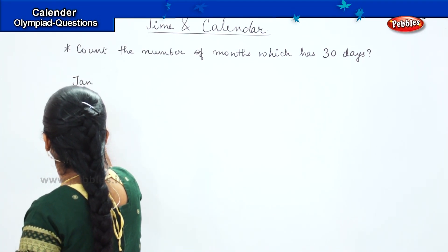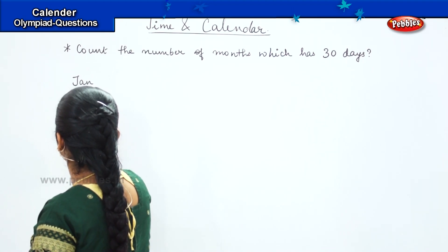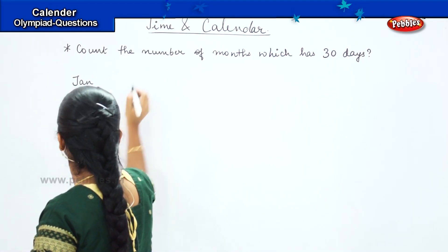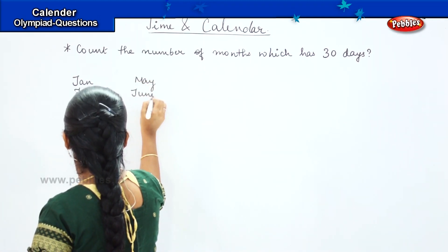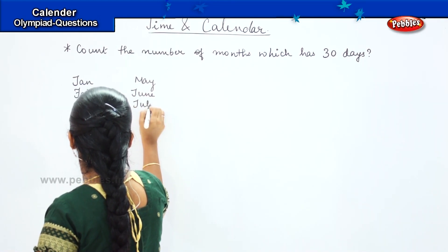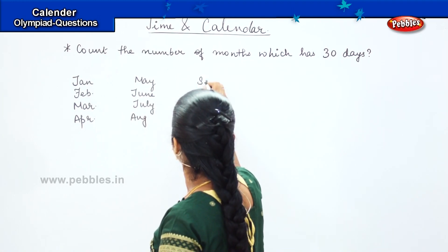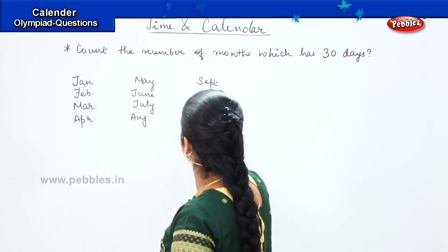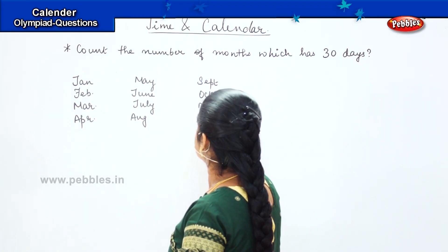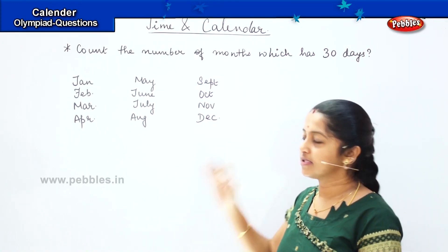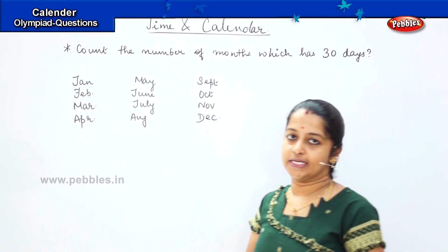January, February, March, April, May, June, July, August, September, October, November, and December. I have written all 12 months on the board. Now let us write how many days each month has.